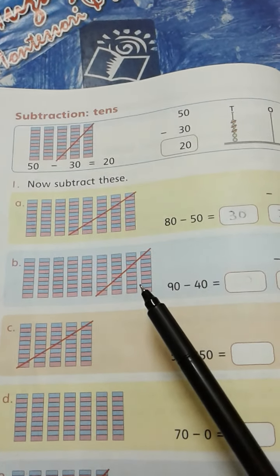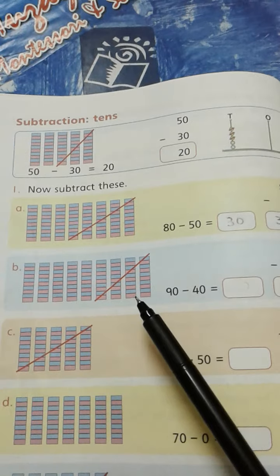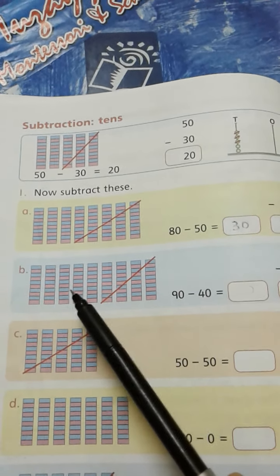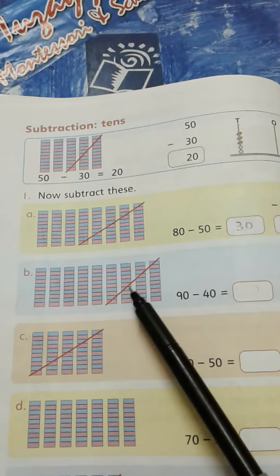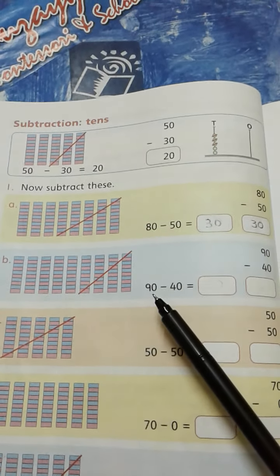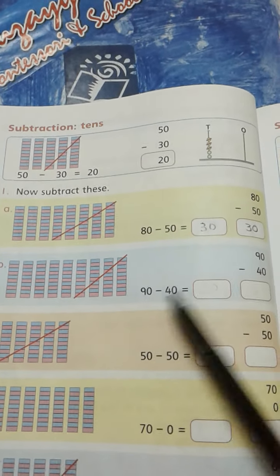Again we have to see how many tens do we have over here. Let's count: 1, 2, 3, 4, 5, 6, 7, 8, and 9. So 9 tens means 90.